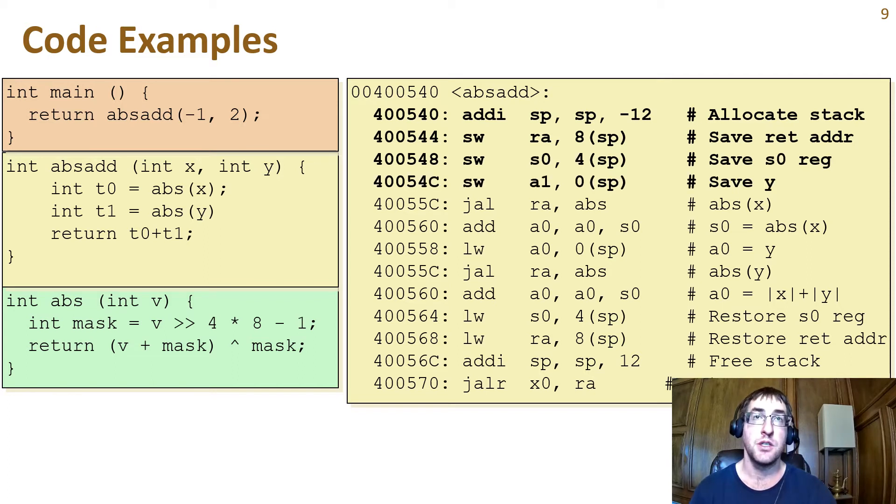The next two instructions are saving the other two registers on the stack: s0, which we need to save because it is a callee saved register, and a1, which holds the value for y.